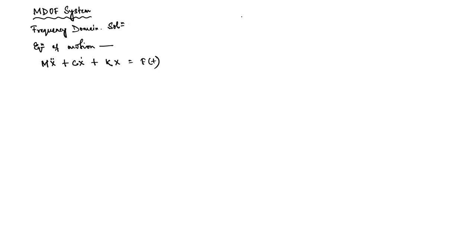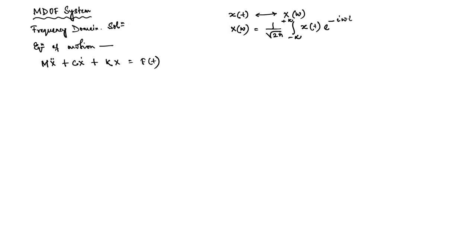If you recall, we have x(t) that we can convert into X(ω), and we can also bring back x(t) from capital X(ω). X(ω) is 1 over square root of 2π times the integral from minus infinity to plus infinity of x(t)·e^(−iωt) dt. And how to bring back x(t): it is again 1 over square root of 2π times the integral of X(ω)·e^(iωt) dω. That is the Fourier transform pair.